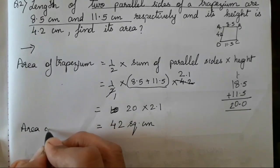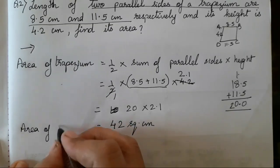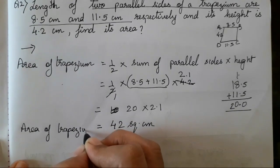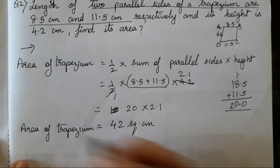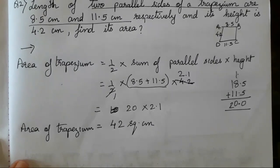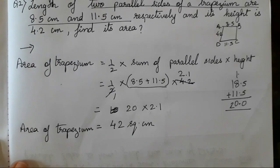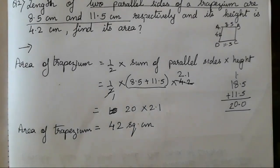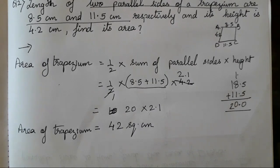So area of trapezium for this sum is 42 square centimeters. The multiplication is done the same way — at the end you have to add the decimal point. Let's do the third sum now.